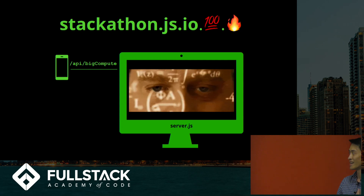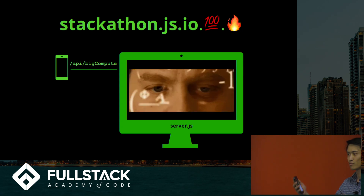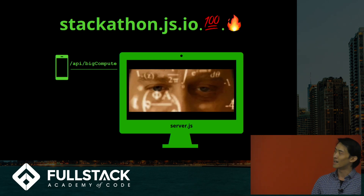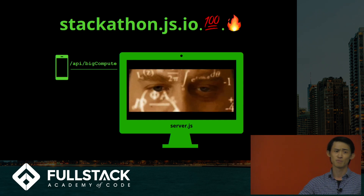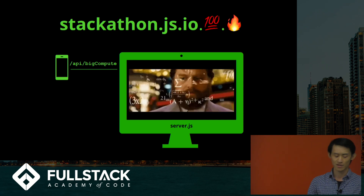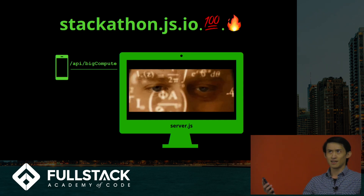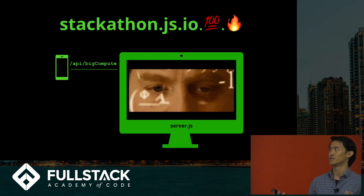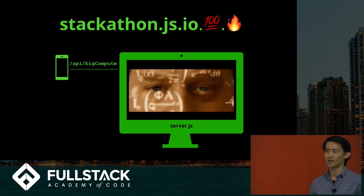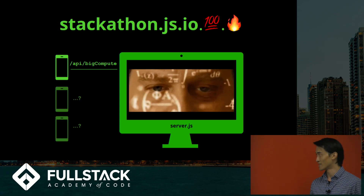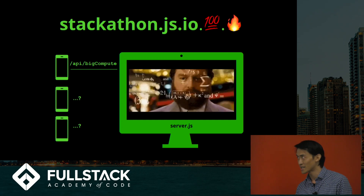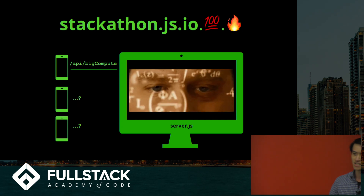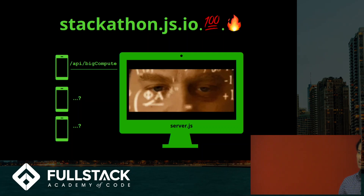Second bottleneck: you have some really computationally expensive endpoint. In your API it's doing a lot of maybe image processing or something, some other algorithm is running. It's going to hold up a lot of further HTTP requests that are coming in because it's waiting for this to return because it's blocking. So that's another bottleneck we can address.